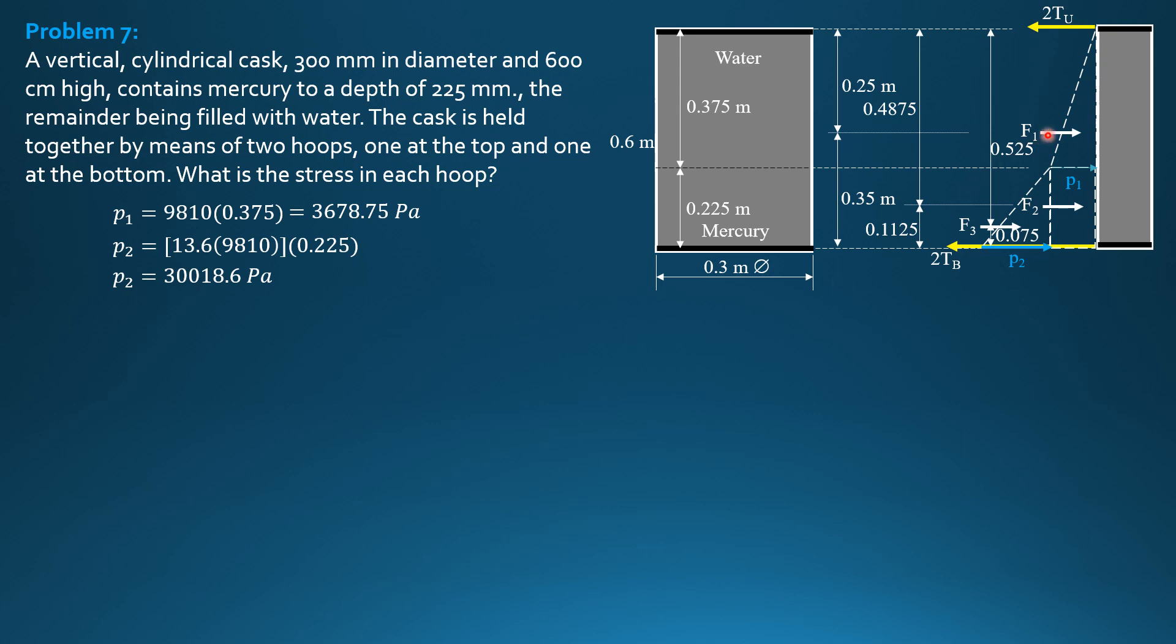Then F1, volume of this triangular pressure diagram, one-half or 0.5 of P1, which is 3678.75, height 0.375. Perpendicular to the board is the diameter, so 0.3 times 1. So F1 is equal to 206.93 newtons.